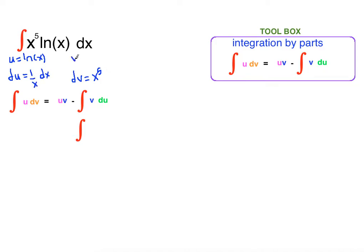So what is v? What is the anti-derivative of x to the fifth? Anti-derivative of x to the fifth is 1 sixth x to the sixth.